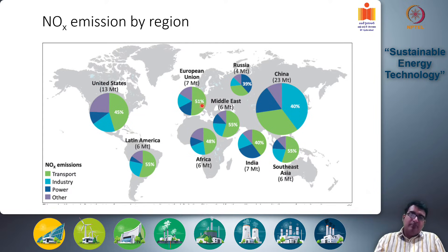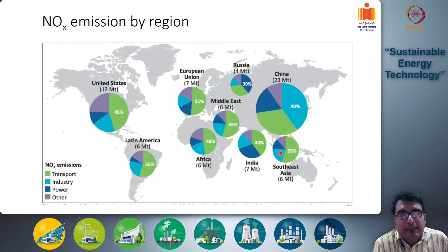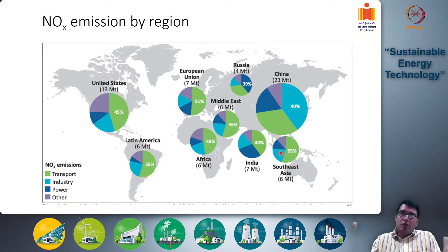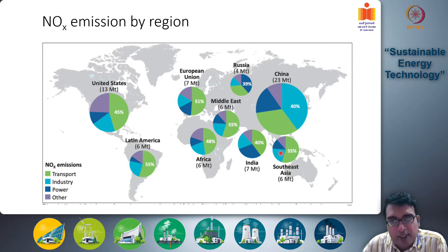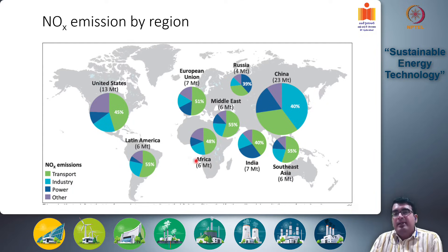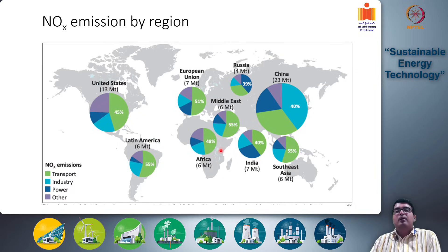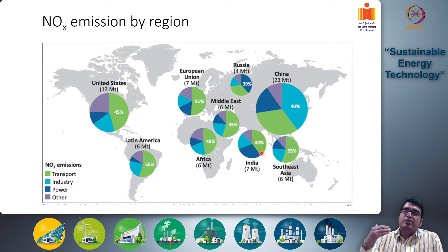Once again, China is the leading emitter of NOx, followed by the United States. The European Union also has reasonably large NOx emissions, comparable with India. This is because the transportation sector has a lot of cars being used in developed world countries, so car-based NOx emissions are quite high in EU and the US. In China and India, coal-based power production also takes up a significant chunk of NOx.